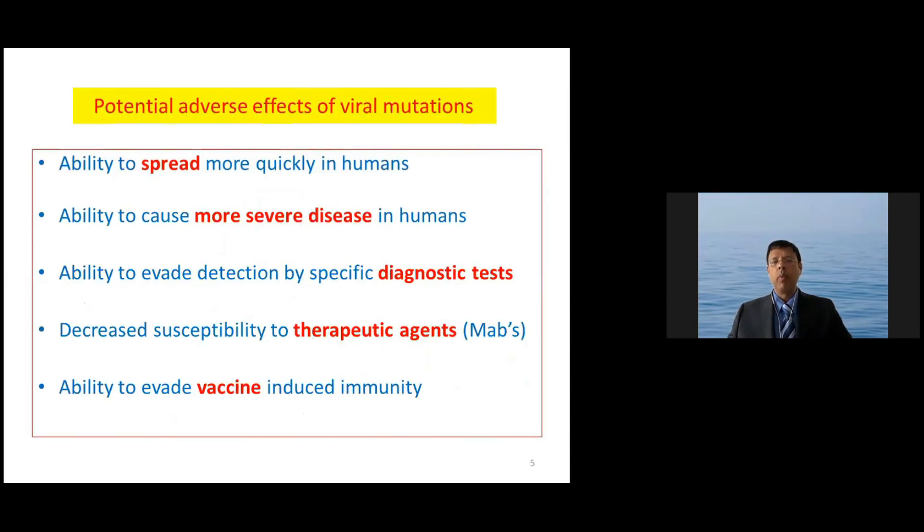And what are the potential effects of these viral mutations? There are five effects we must consider: effects on the spread or transmission, more severe disease, effect in diagnostic tests, therapeutic agents—that is the agents we use to treat—and does it have an effect on the vaccine responses. So those are the five that we look at when you have a variant to see which is significant.